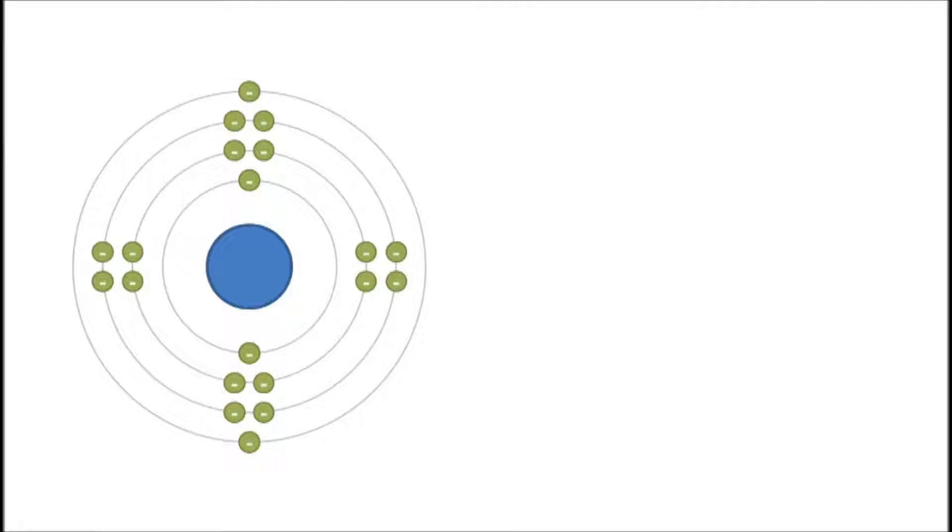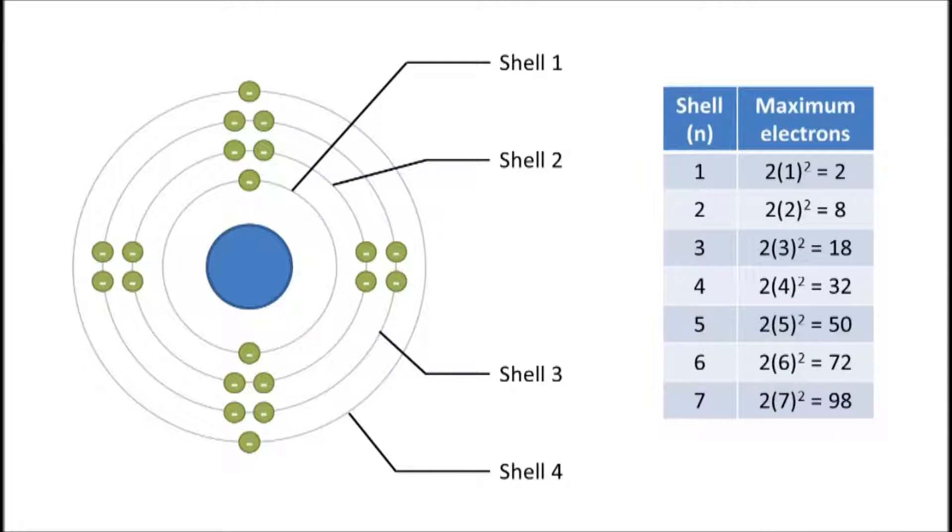In this model, electrons are shown to be arranged in shells, with each shell being able to accommodate up to 2n² number of electrons. However, increasing understanding of electrons means that the Bohr model is inaccurate and simplified.